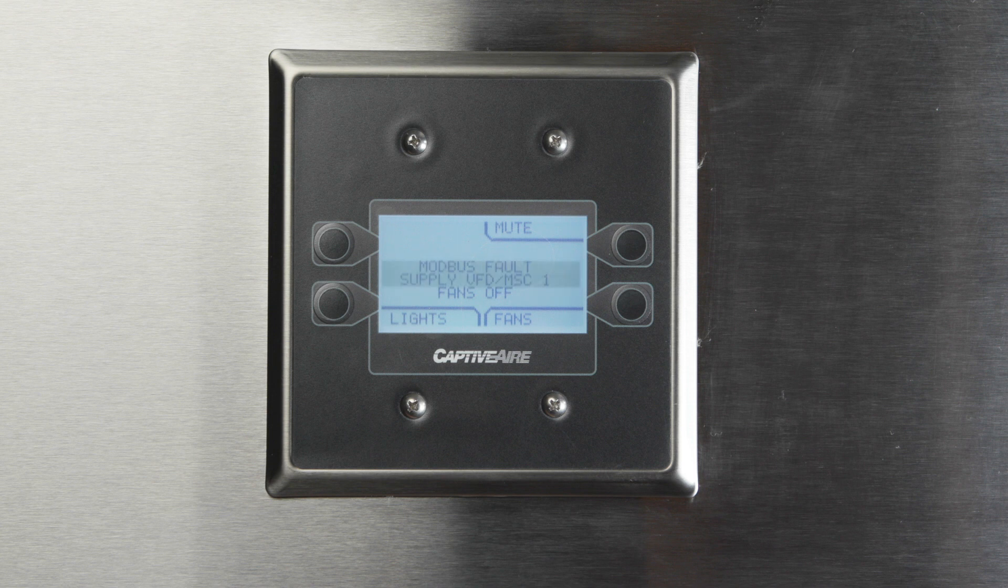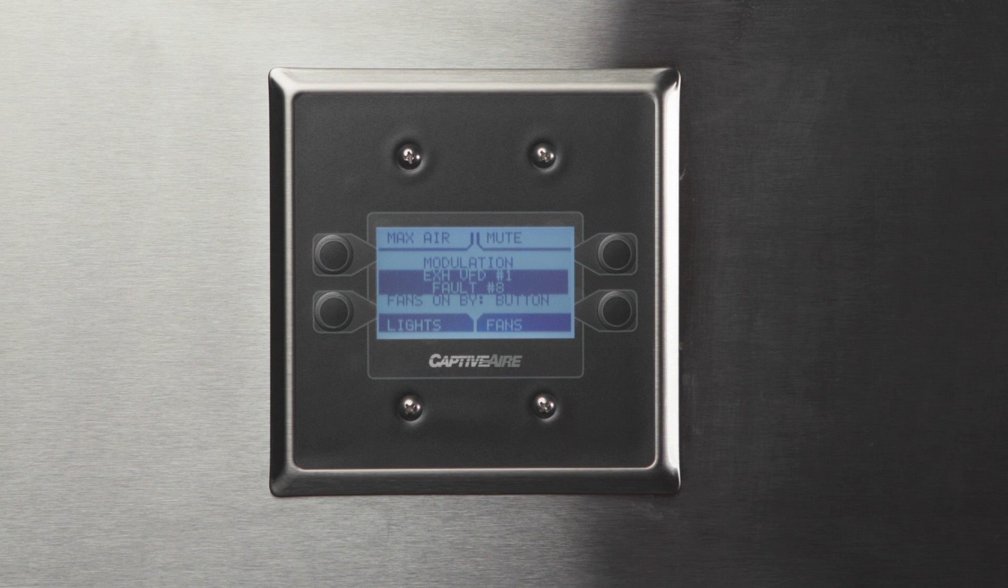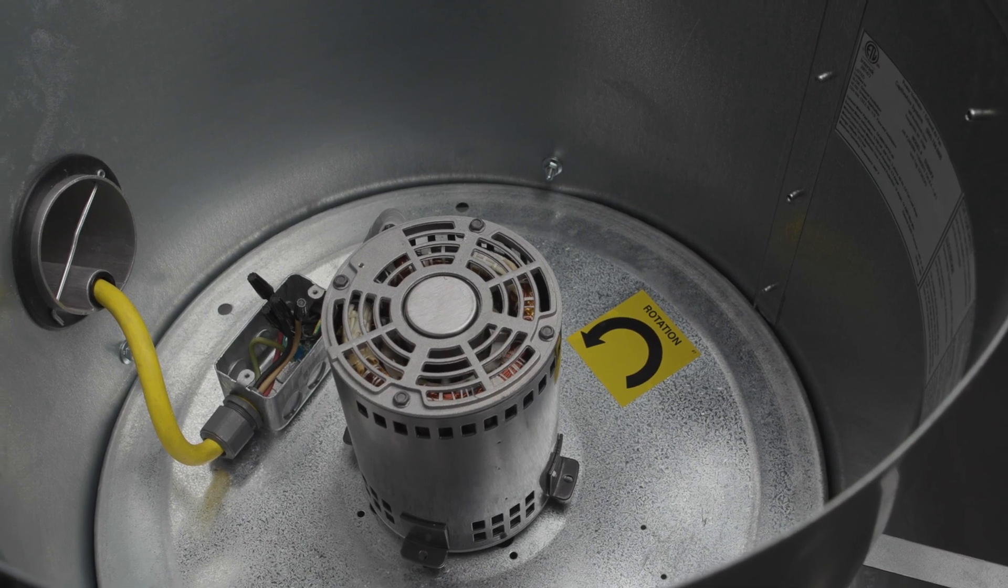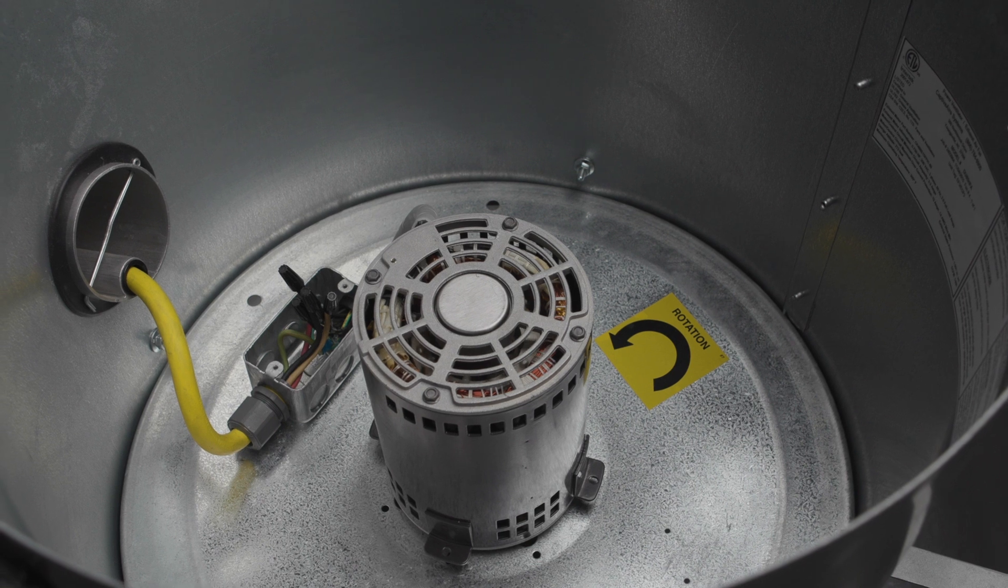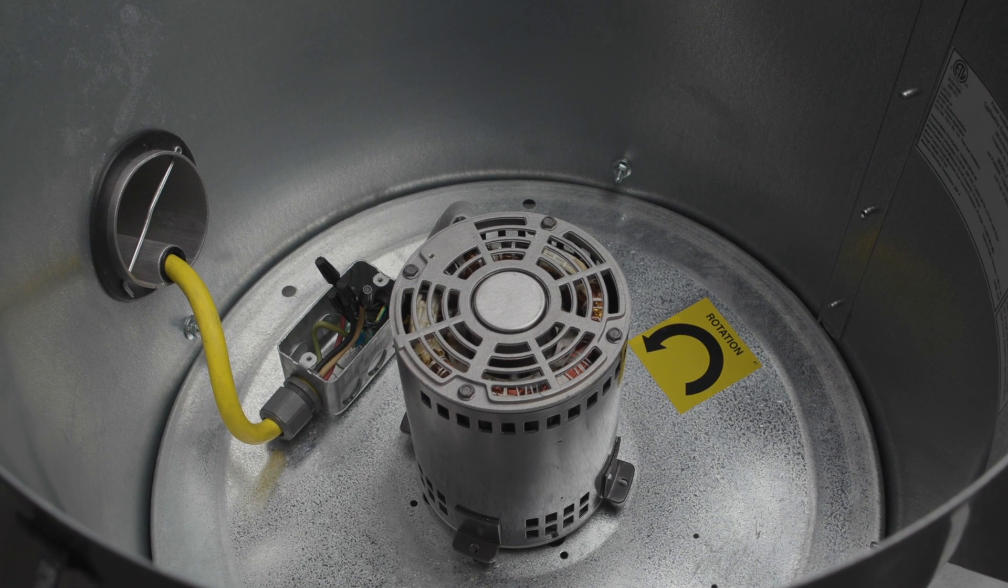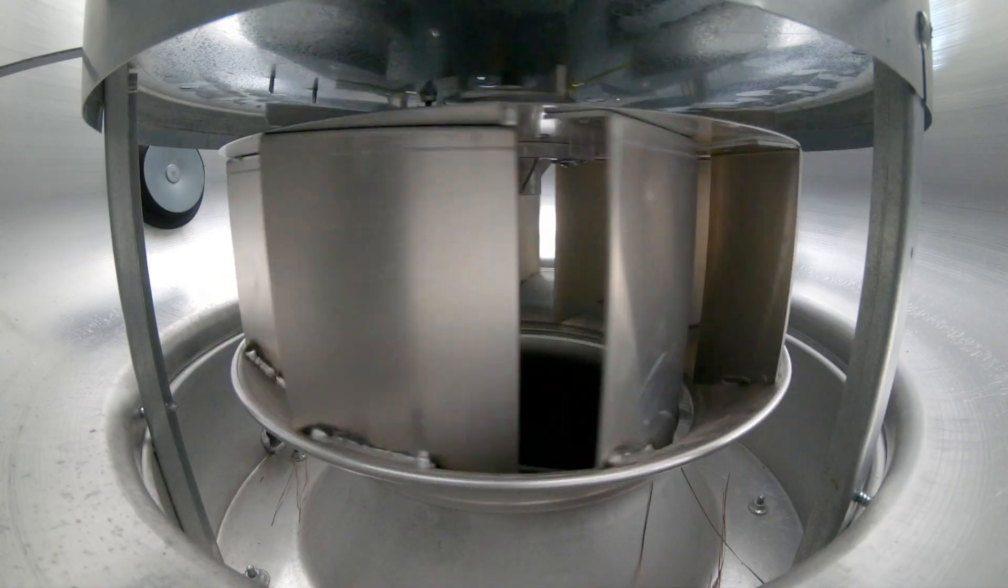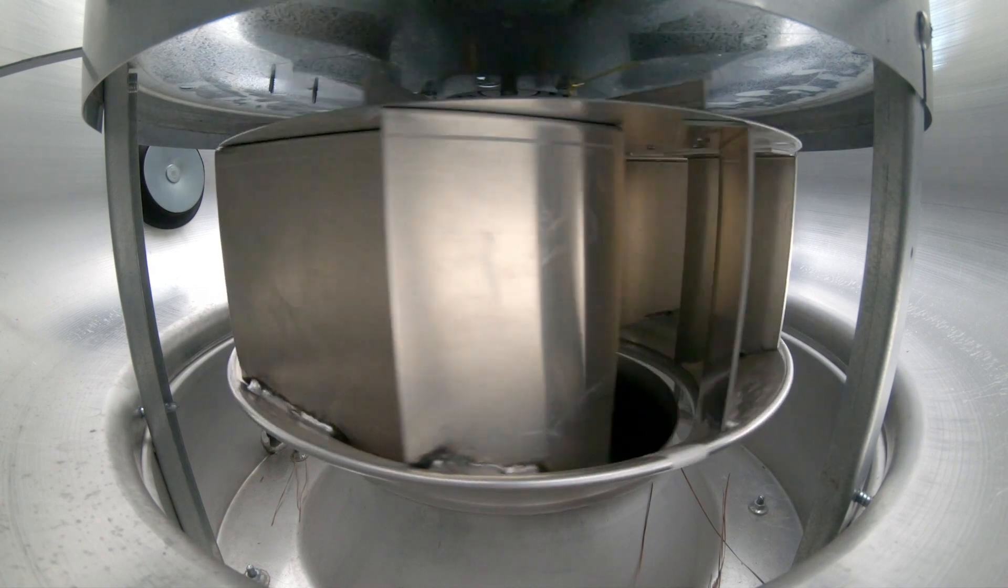Another common issue that comes up happens when you try to run the fan for the first time. You may receive a Modbus fault number 8, which is an overload fault. The first thing to check is fan rotation. Fan rotation must be verified visually because if backwards, the fan will still move air in the correct direction, but it will only move half as much and the amp draw will be considerably higher.